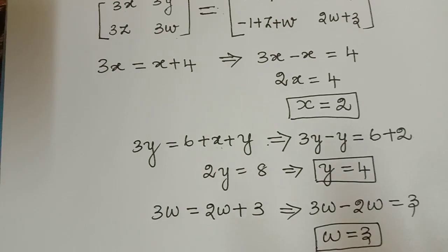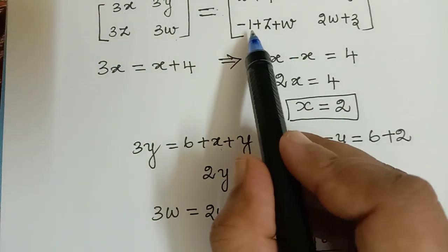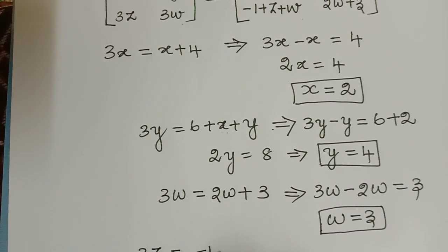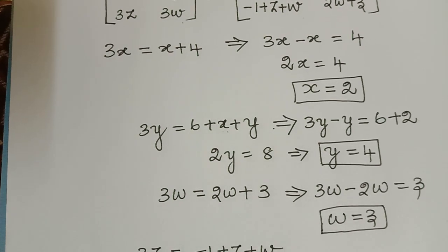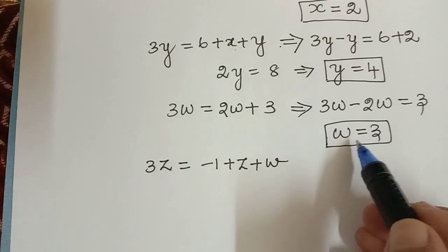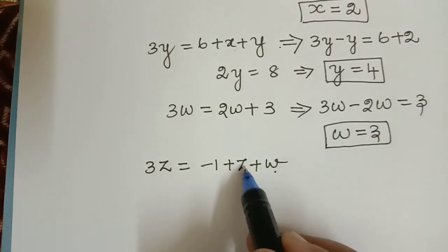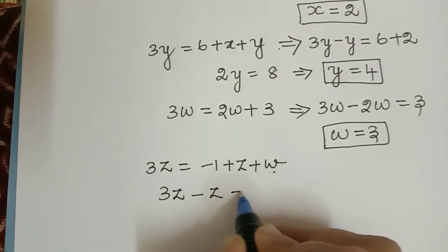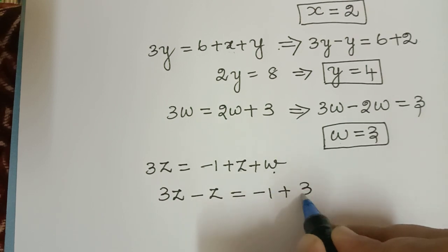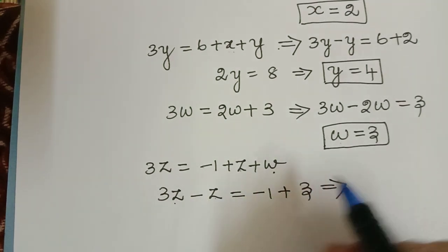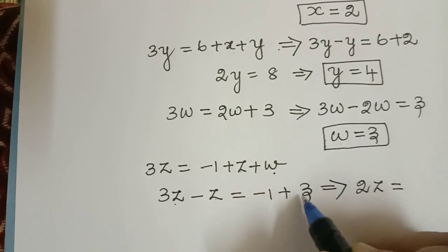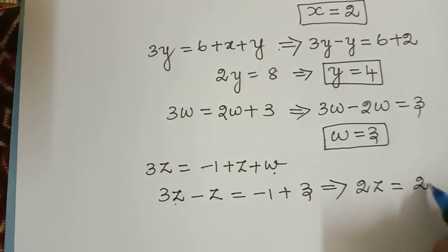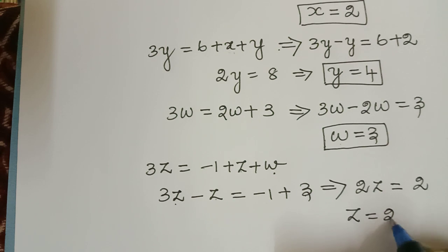Finally, we are left with 3z equals minus 1 plus z plus w. When we simplify this, we substitute the value of w and take z to the left hand side. So we get 3z minus z equals minus 1 plus 3, which gives 2z equals 2, and therefore the value of z is equal to 1.